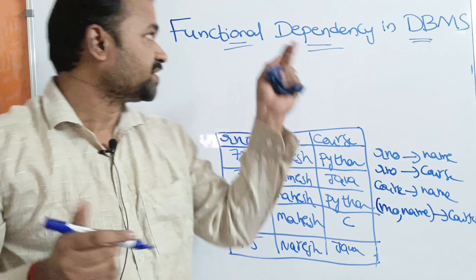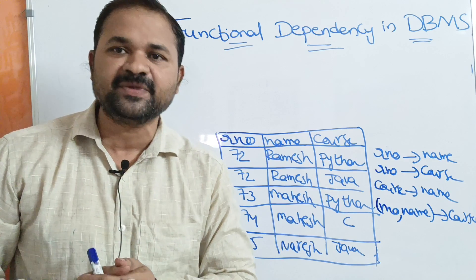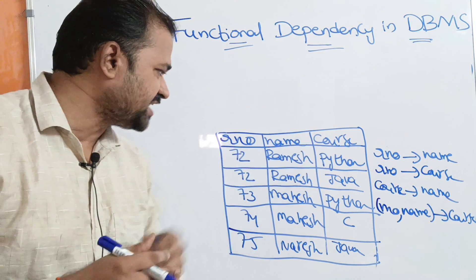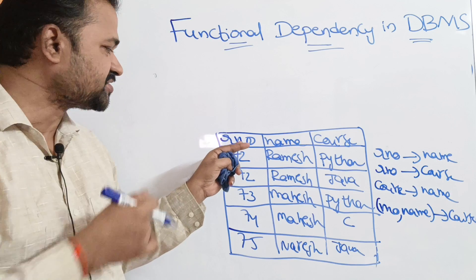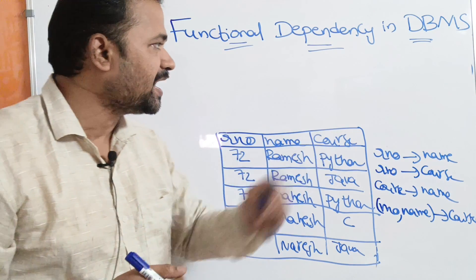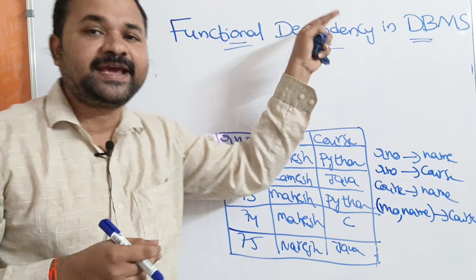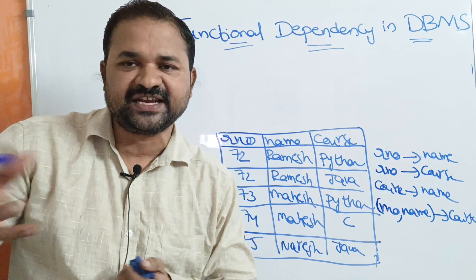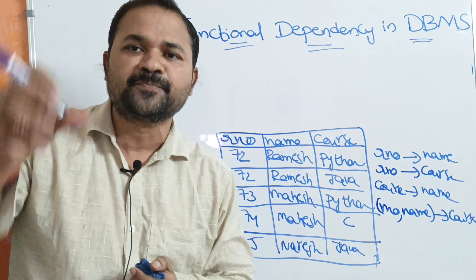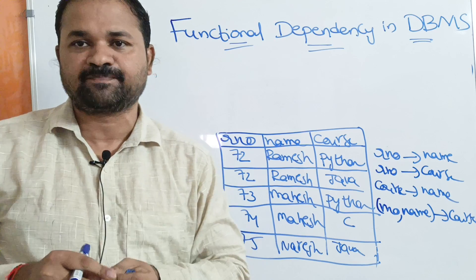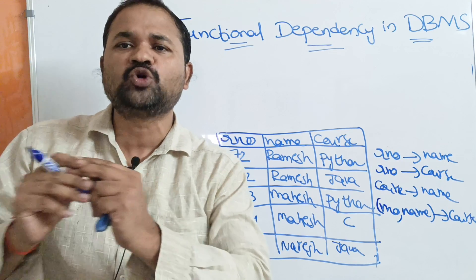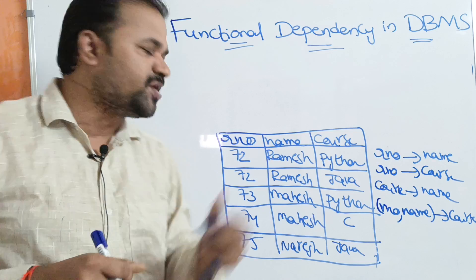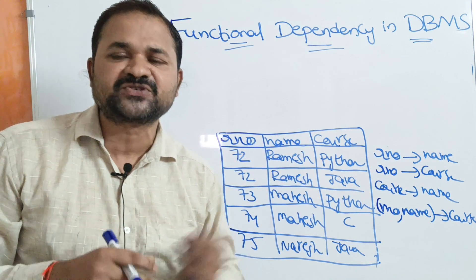Let us discuss functional dependency in DBMS. We know that a table is a collection of attributes. If you take this table, it contains three attributes: roll number, name, and course. The name 'functional dependency' itself specifies the meaning — one or more attributes of a relation depend upon one or more attributes of the same relation. A relation and a table are the same thing.